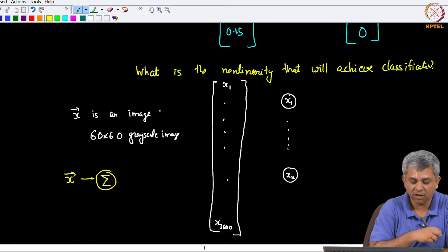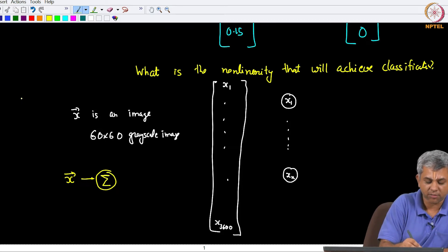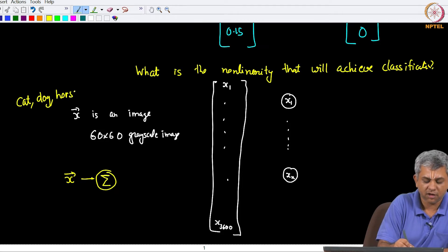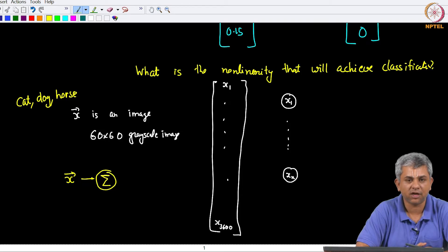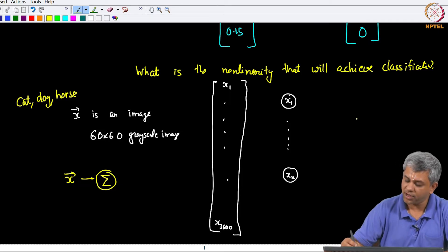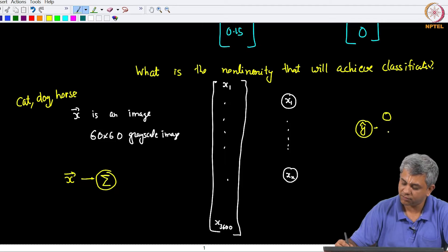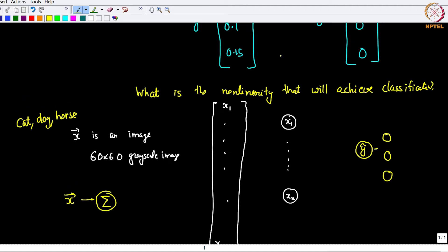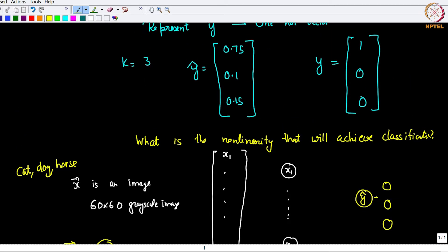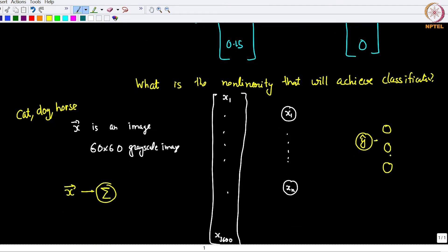Let us say this is an image which we know is either of a cat, a dog, or a horse. We need a Y-hat here, and Y-hat now is going to have three components: Y-hat 1, Y-hat 2, Y-hat 3 as shown above. Ideally you would like only one of these to be one, but what you are going to get is actually some number between 0 and 1 for all three.